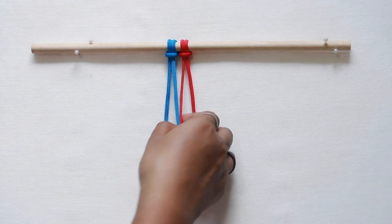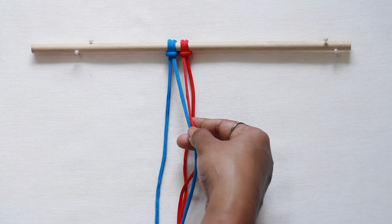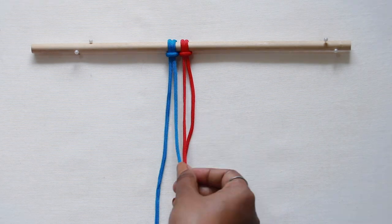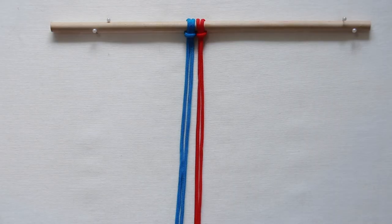As you know, middle 2 strands are filler cords which always stay together. While working, think of them as 1. And outer 2 strands are considered working cords.